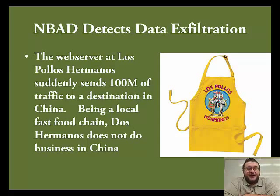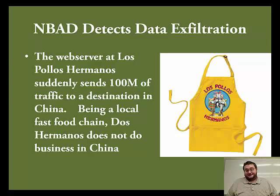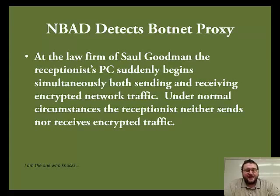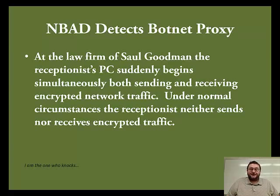Data exfiltration: The web server at Los Pollos Hermanos suddenly sends 100 megabytes of traffic to a destination in China. Being a local fast food chain, they do not normally do business in China. At the law firm of Saul Goodman, the receptionist's PC suddenly begins to simultaneously send and receive encrypted network traffic. Under normal circumstances, that receptionist never sends or receives encrypted traffic — she's probably infected with a bot and her system is acting as a botnet proxy.